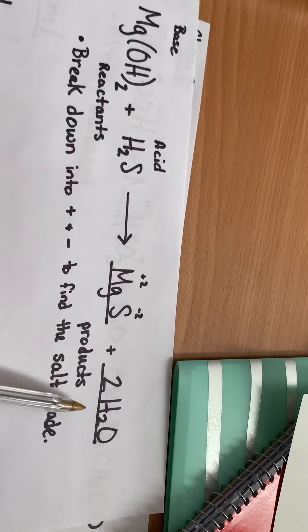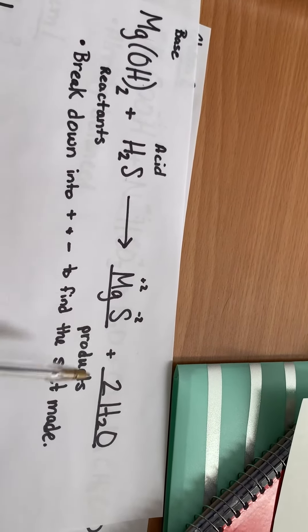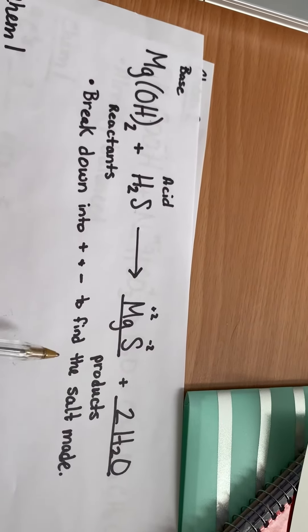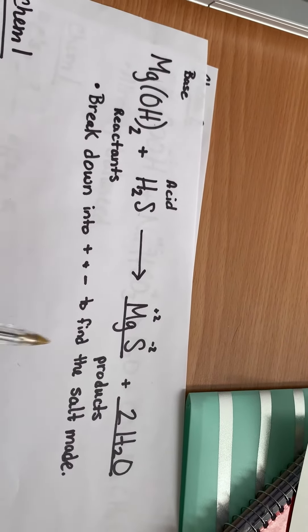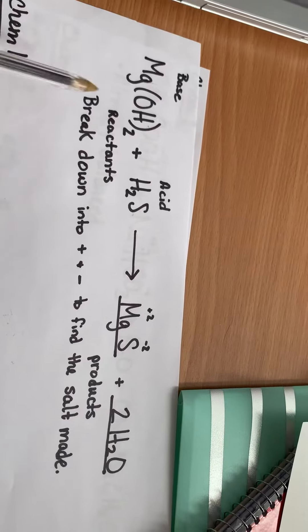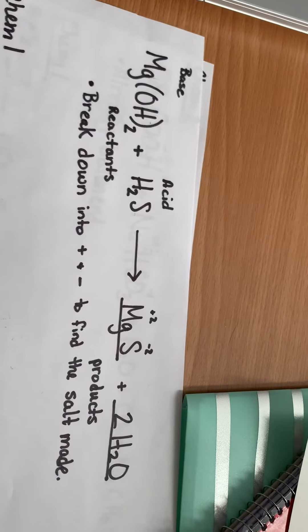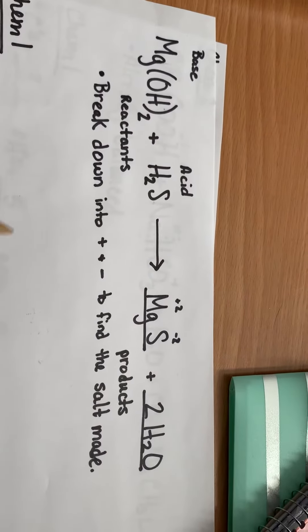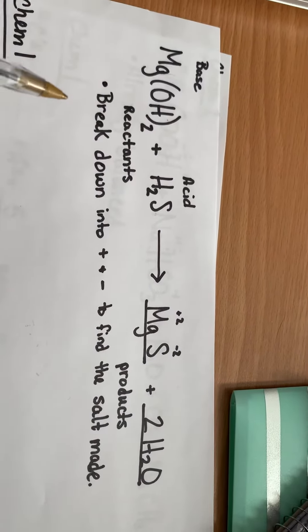And then there's my water. So this is my product side. I need to make sure everything's balanced, because in Chemistry, we cannot create or destroy matter. So we need to make sure that they have equal amounts on each side. Chemistry 1, we were getting ready to do this. So this is something new for you guys that we had just missed out on.